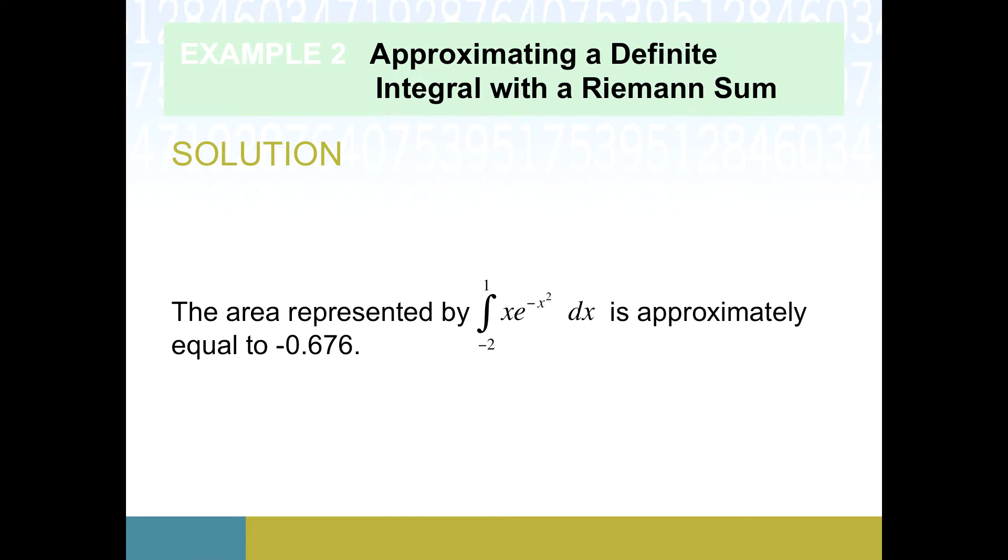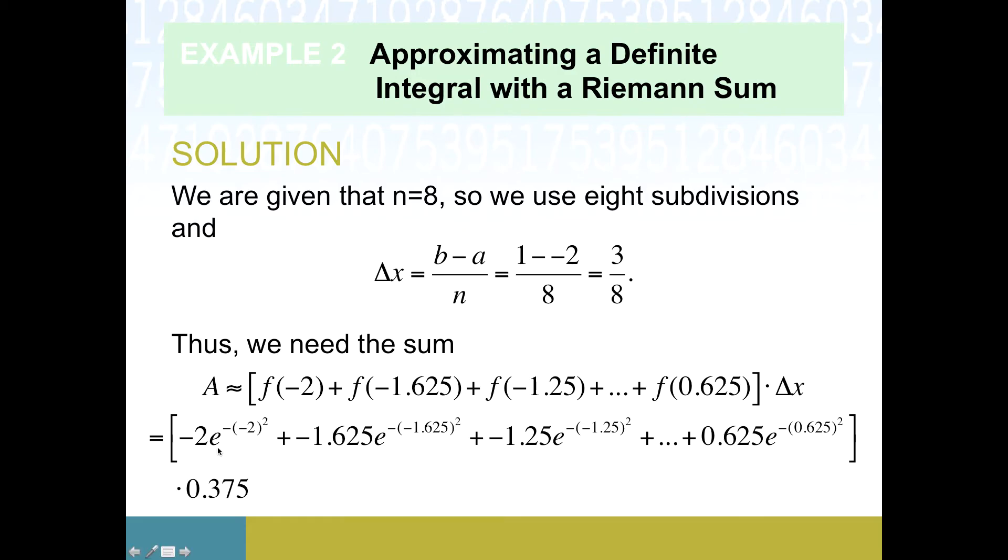This definite integral is the exact area; what we've come up with is an approximate value. Three eighths times all those things added together gets us negative 0.676. One thing to think about: why is this number negative? What does it mean to have a quote negative area?